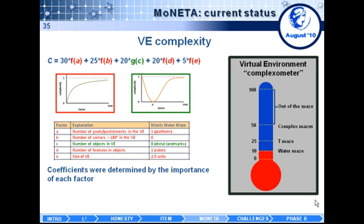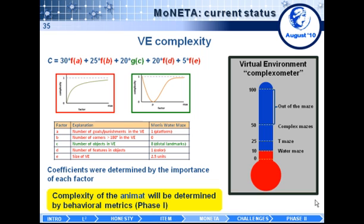The current phase one goal is to simulate the Morris water maze, which according to this equation has a complexity of 10. The T-maze, which we plan to simulate, has a complexity of 25. Other mazes we are targeting have a complexity of around 50, and after 50 we think that the animat is actually out of the maze. The virtual environment complexity is one chapter, and measuring the complexity of the brain is a whole other challenge that we need to address before the end of phase one.